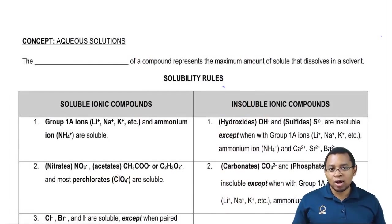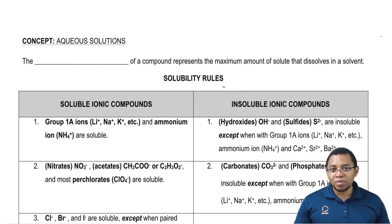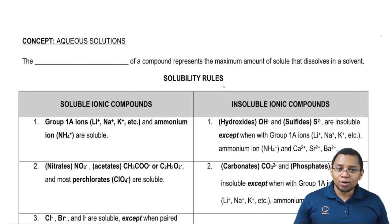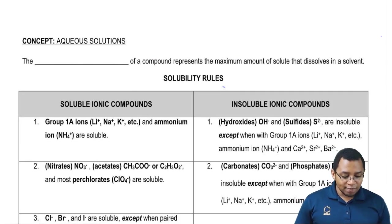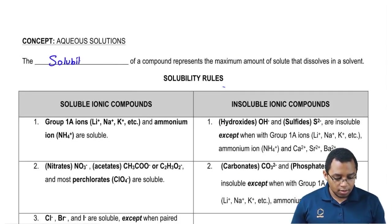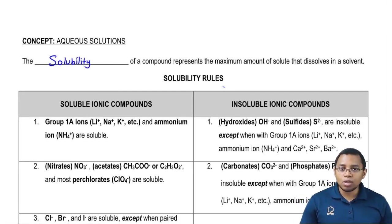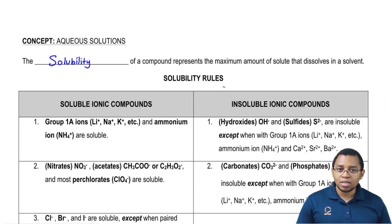I honestly hate when we have to memorize a lot of things. Polyatomic ions is one, and this would be the second. Here we have to learn our solubility rules. The solubility of a compound represents the maximum amount of solute you can dissolve in the solvent.